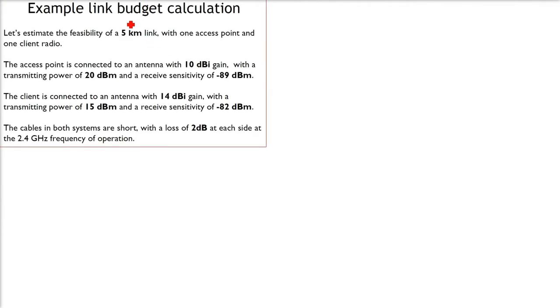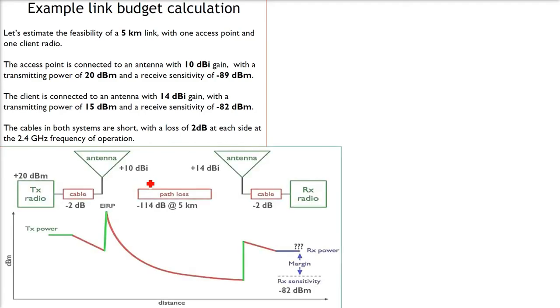Let us take an example here. We have a five kilometer link with two points—one access point, the other a client radio. The transmitting power is 20 dBm. The receiver sensitivity is minus 89—I'm talking about the transmitter. 10 dBi is the gain. We have cable losses, say minus 2 dB.